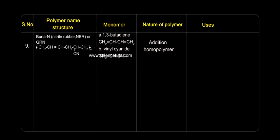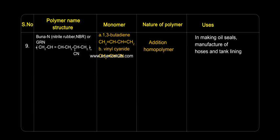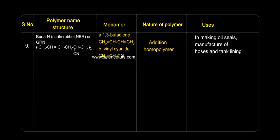Buna-N: used in making oil seals, hoses, and tank lining.